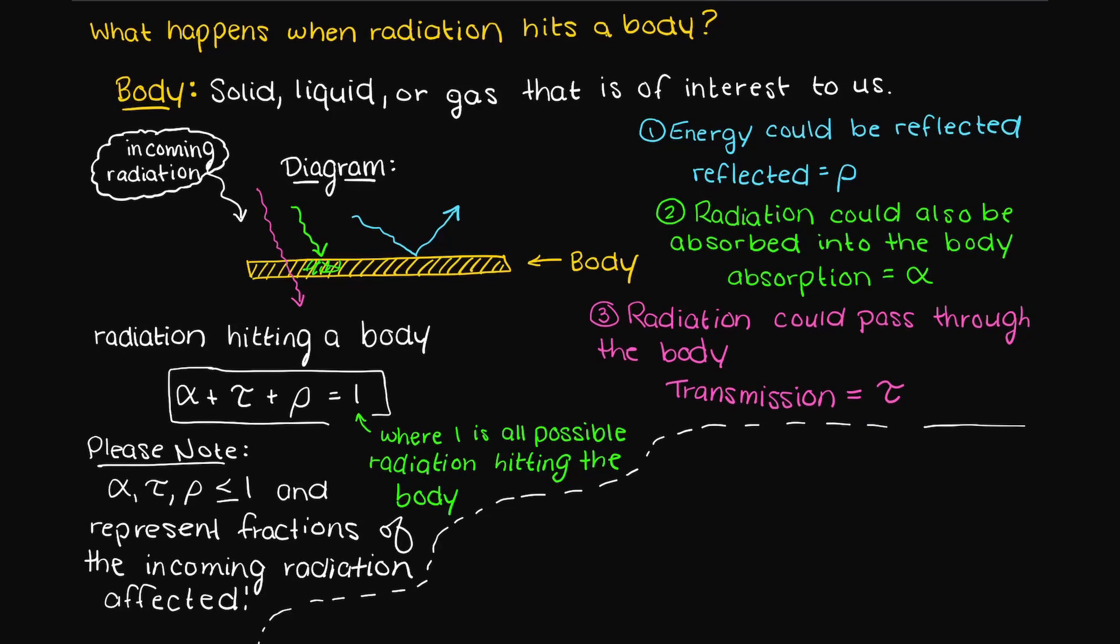If a body absorbs zero of the incident radiation, then the body is said to have no attenuation, and therefore alpha equals zero. This can be called a transparent medium.